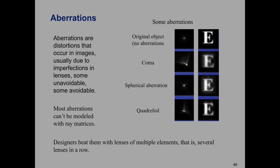It's possible to correct for spherical aberration, but what you have to do is cut the surface of the lenses in the shape of a paraboloid — you have to use a parabolic lens. Another way to reduce some of these aberrations is to use multiple lenses where the aberrations end up canceling out.